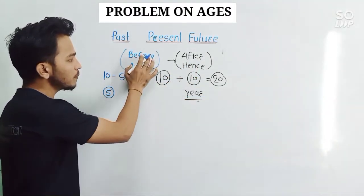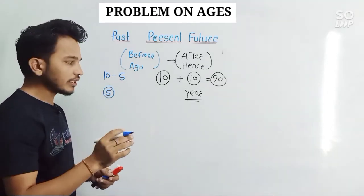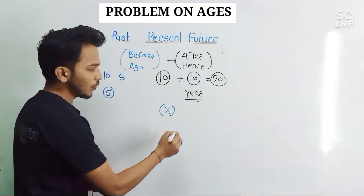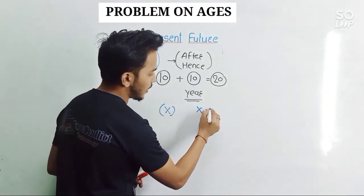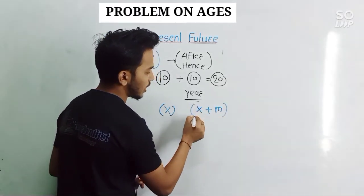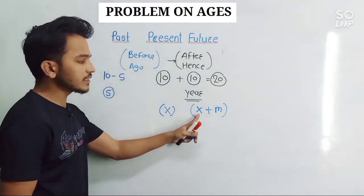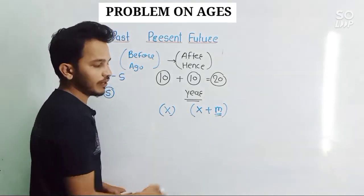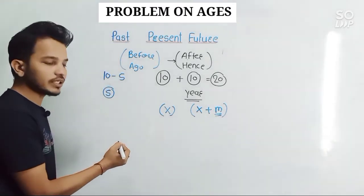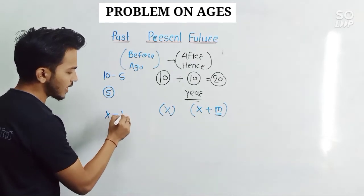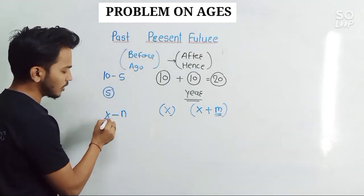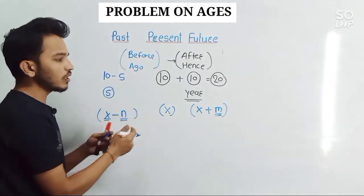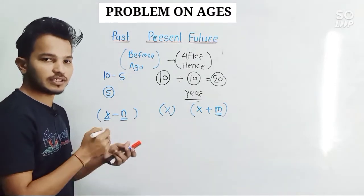Just as 'after' and 'hence' define future age, 'before' and 'ago' define past age. If present age is x, then future age = x + m, where x represents the age of the person and m represents the number of years. Similarly, past age = x − n, where n represents the number of years. We will use these formulas to answer every question.